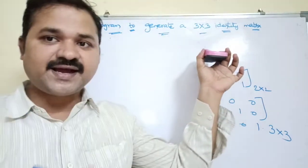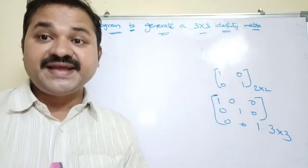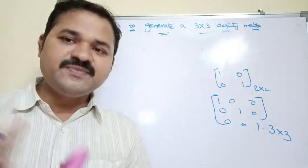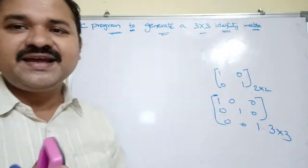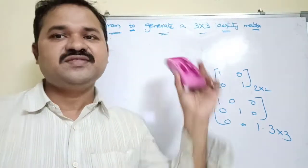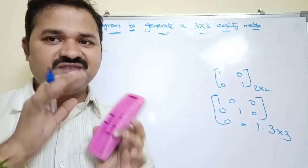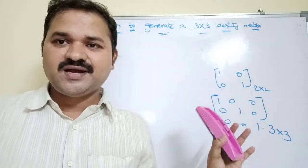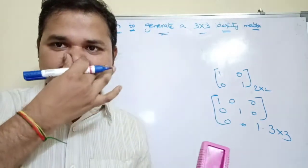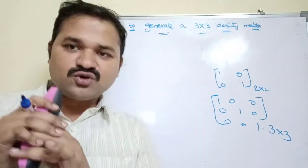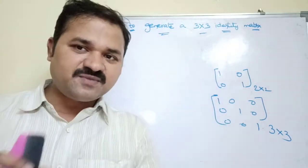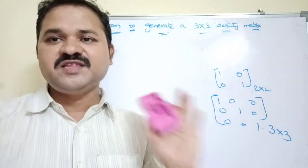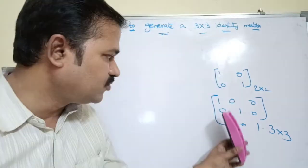The row size and column size is 3, so there is no need to read row size and column size. Reading the elements is also not necessary. Whenever we run the program it has to display this matrix. There is no need for any input like row size, column size, or elements — whenever we run the program the compiler has to display this output.